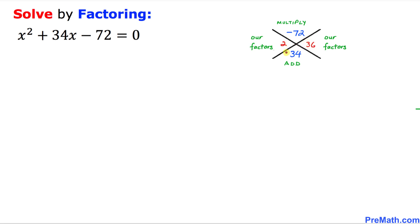Now we need to fix the signs. The first factor is going to be negative 2 and the other is positive 36. We can verify: negative 2 times positive 36 gives negative 72, and negative 2 plus positive 36 gives positive 34.